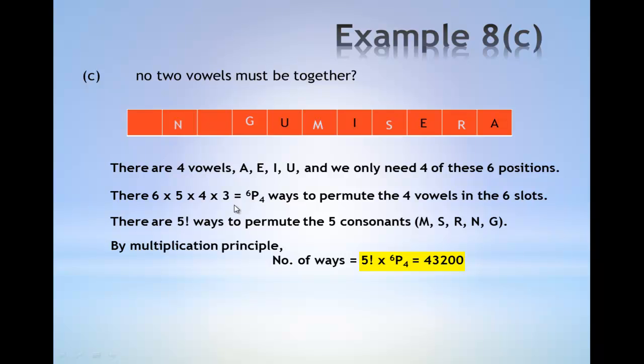Therefore, by multiplication principle, the total number of ways in which no two vowels come together is given by five factorial multiplied by six P4, which gives 43,200.